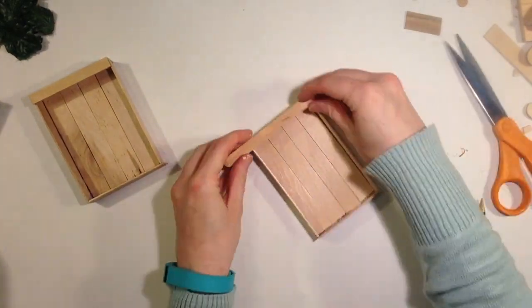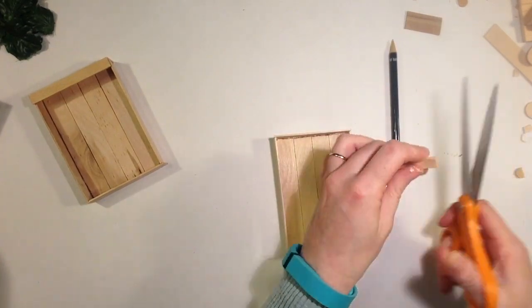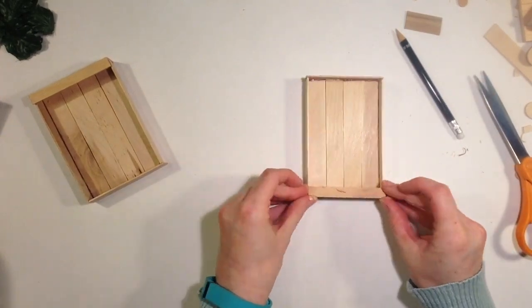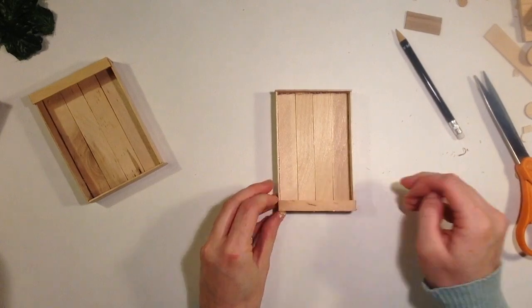Take your last regular popsicle stick, cut off the round end, measure the length of the top, and you're going to glue it in place. This will be the lip for the crate to keep the vegetables inside.